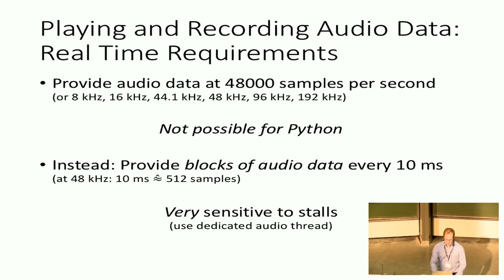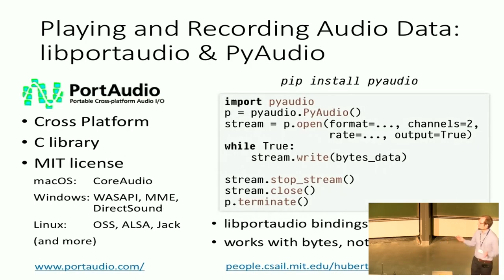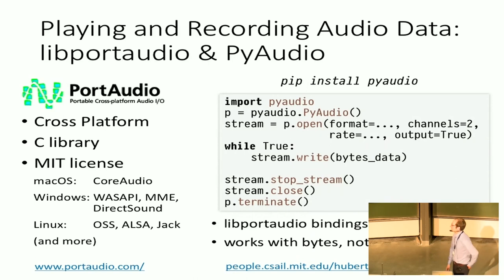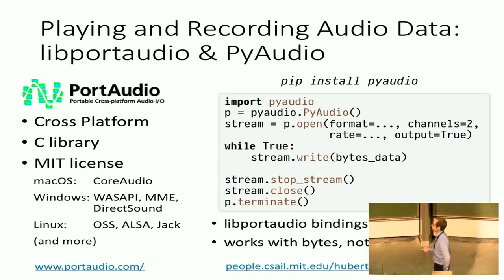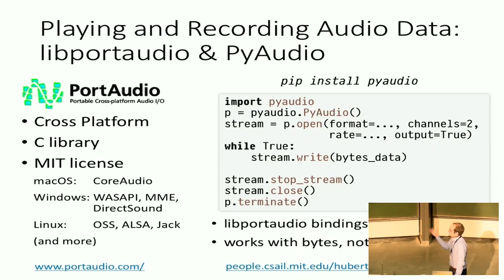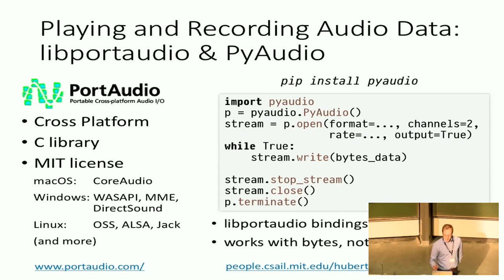At the same time when we did PySoundFile, I also looked around and I knew there was a nice C library — cross-platform, open source — called PortAudio. And at the time, there was already a Python library that used PortAudio, called PyAudio. To use it, you instantiate the library, open a stream, write data to the stream, and when you're done, stop the stream, close it, and terminate the library. It does work really well; however, it is a somewhat low-level binding to PortAudio.